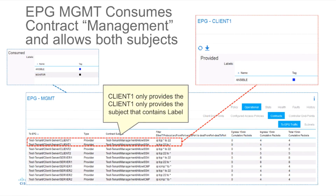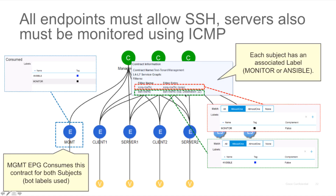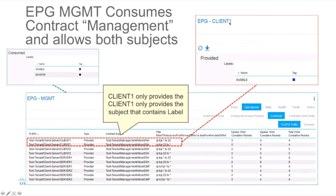If we look at the actual contract instantiation for the management EPG under the Operational tab Contracts, we can see the filters that are applicable for the communications between Client1 EPG and the management EPG. Client1 EPG is providing only the contract with Ansible label match — because it's only using Ansible, it's only going to match that part of the contract. Ansible is the SSH traffic, so this is the only filter that Client1 will be providing to the management station.